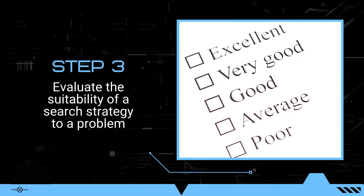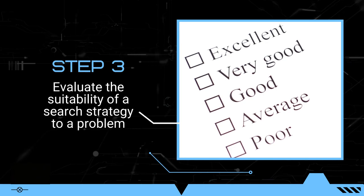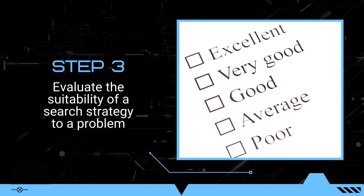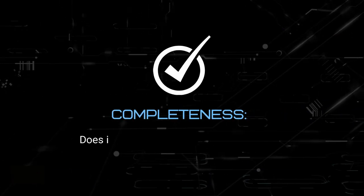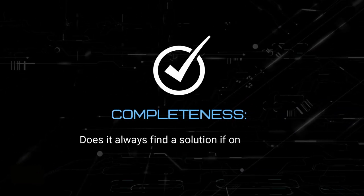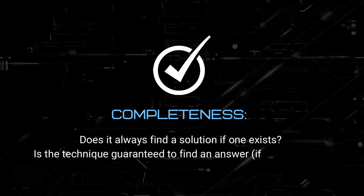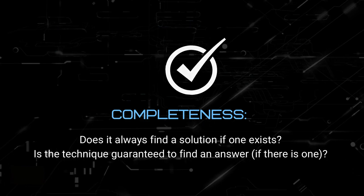So, how do we know which search strategy is suitable for our problem? Step 3 guides us on how to evaluate them. First, we look at completeness. Does it always find a solution if one exists? Is the technique guaranteed to find an answer if there is one? Second, is time complexity. How long does it take to find a solution?